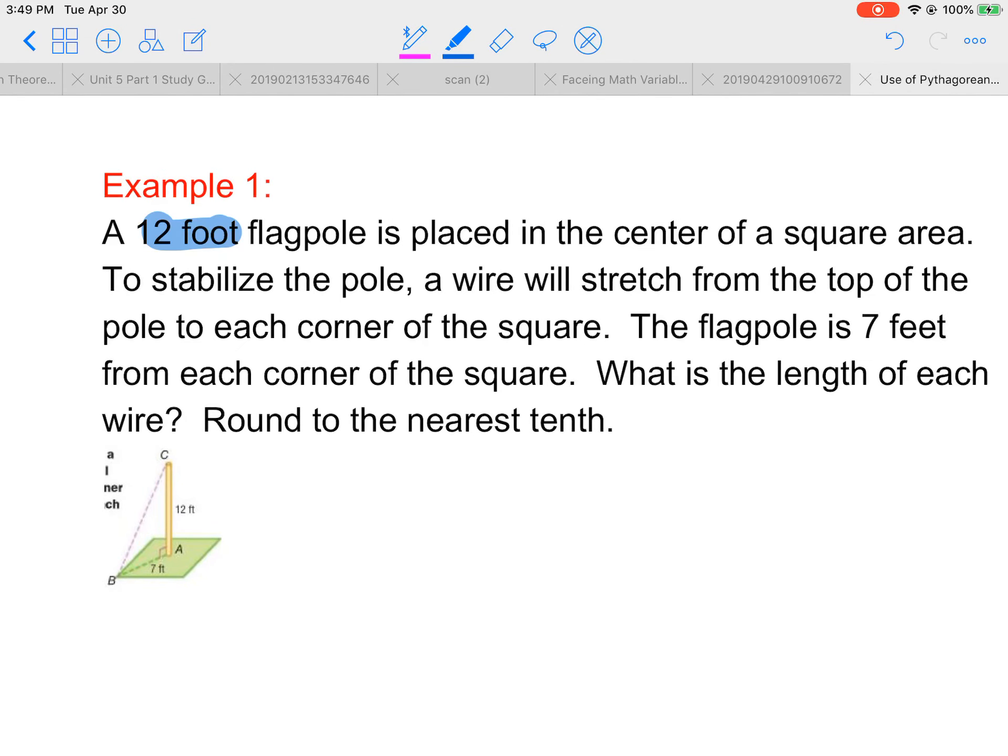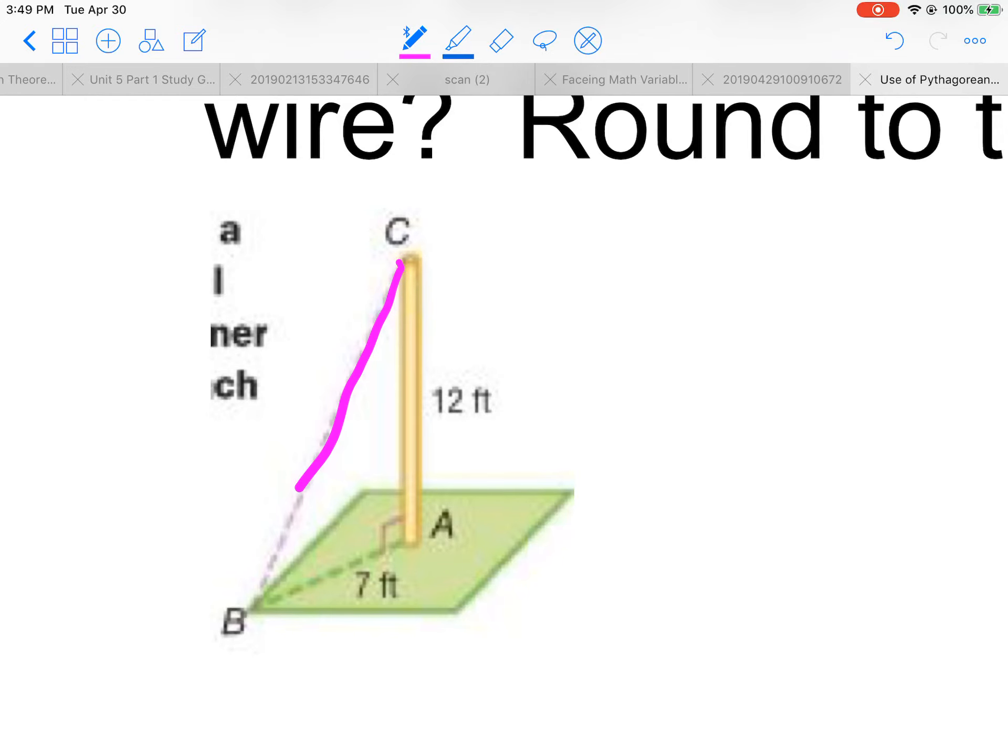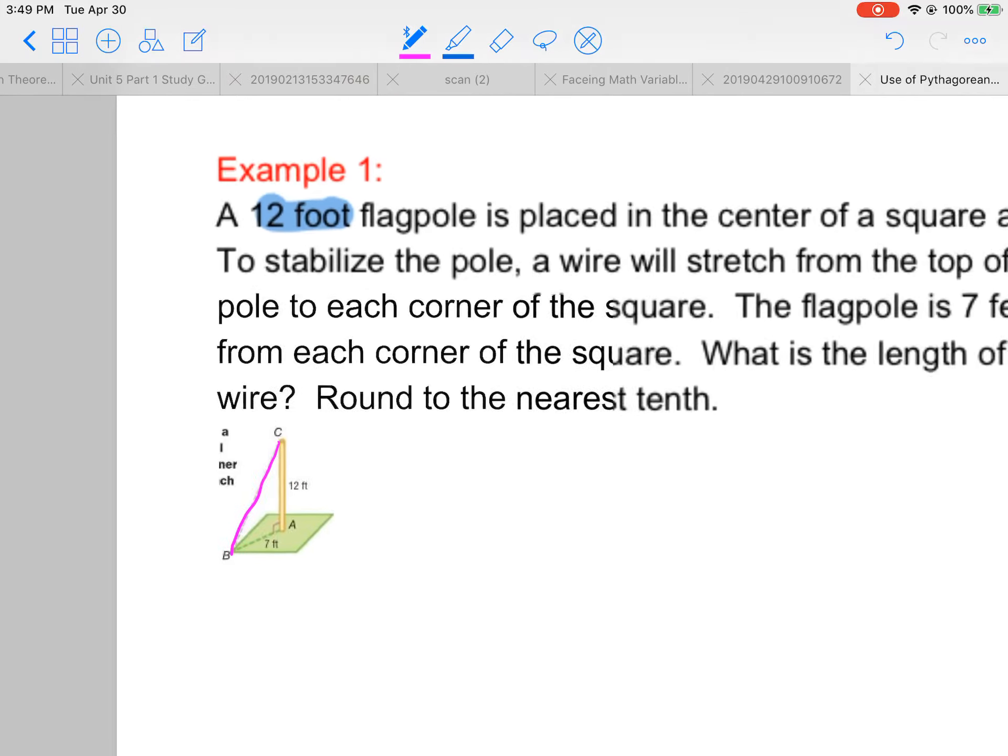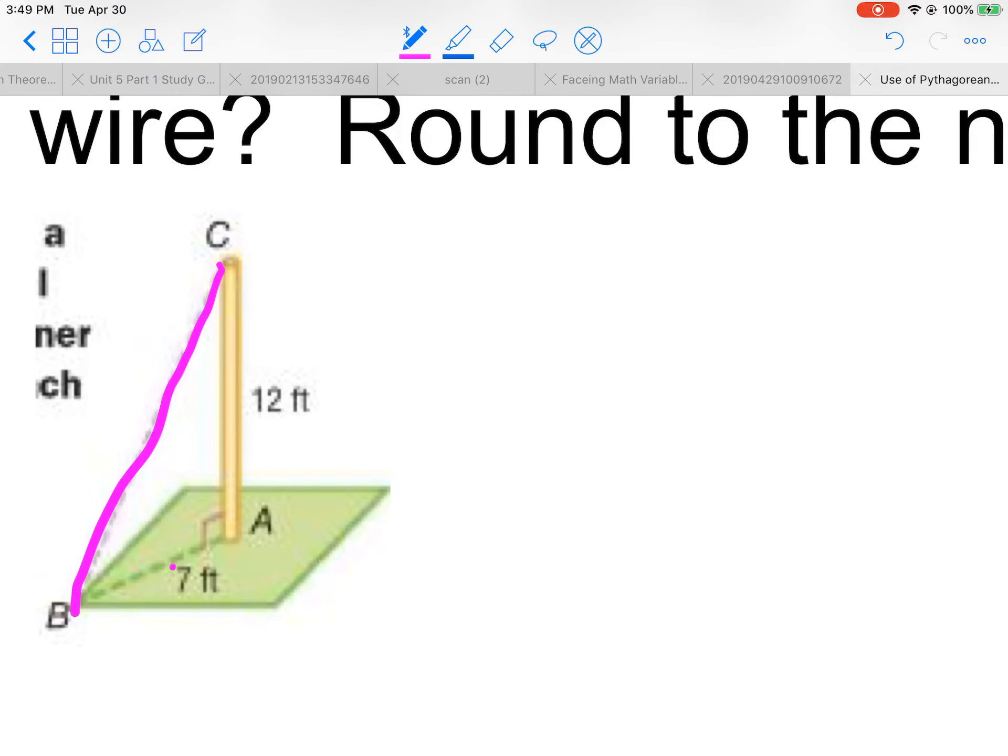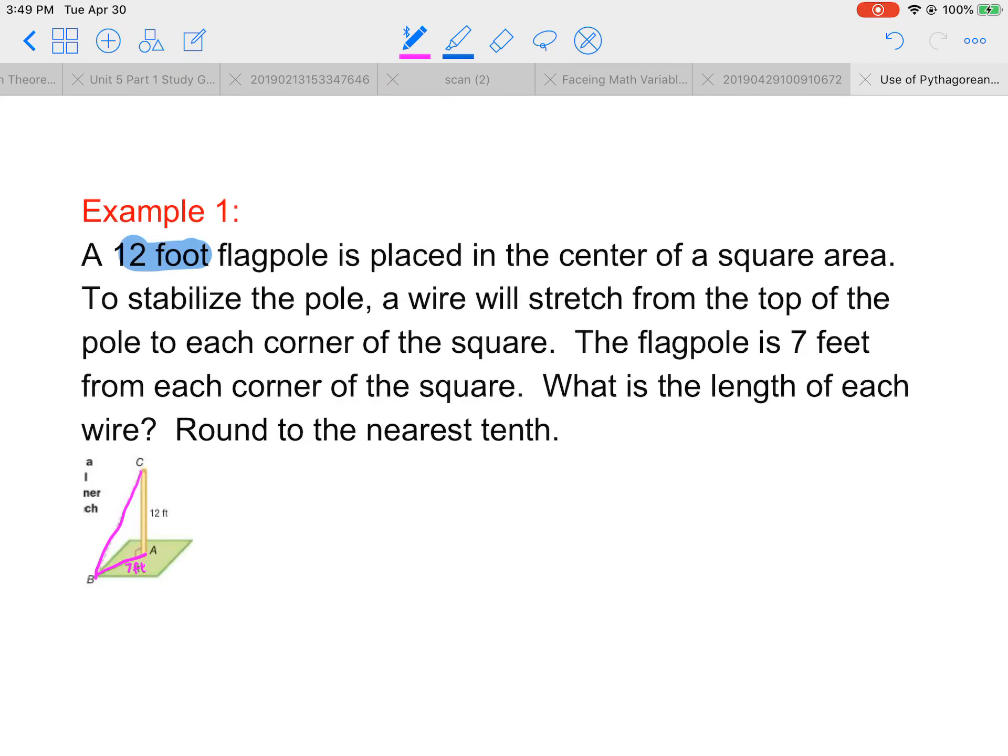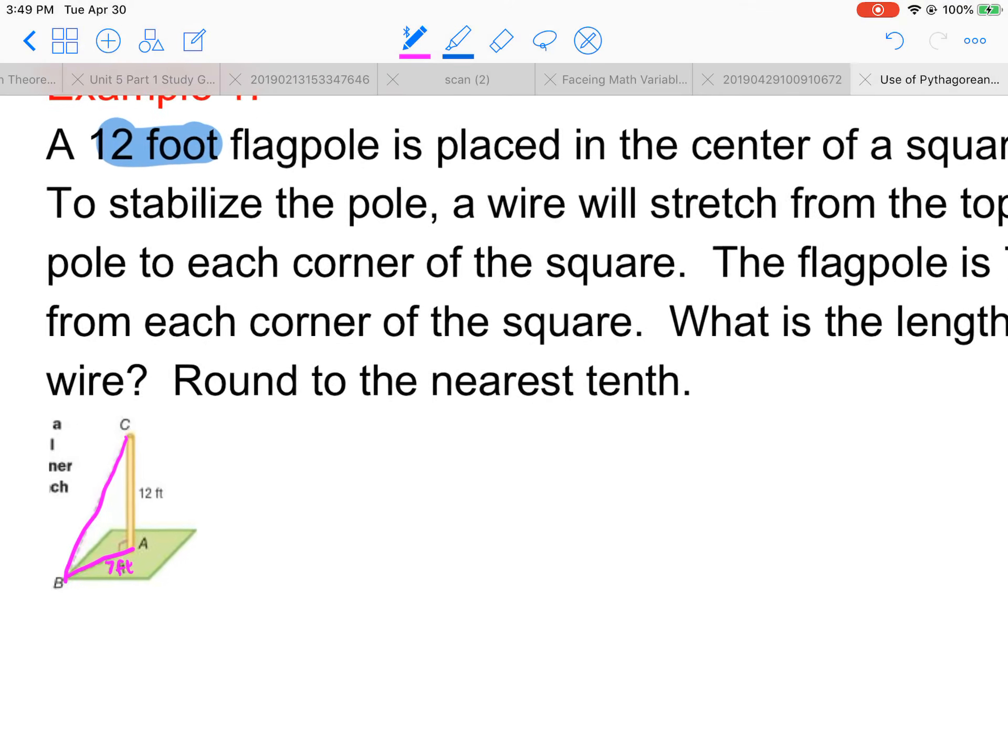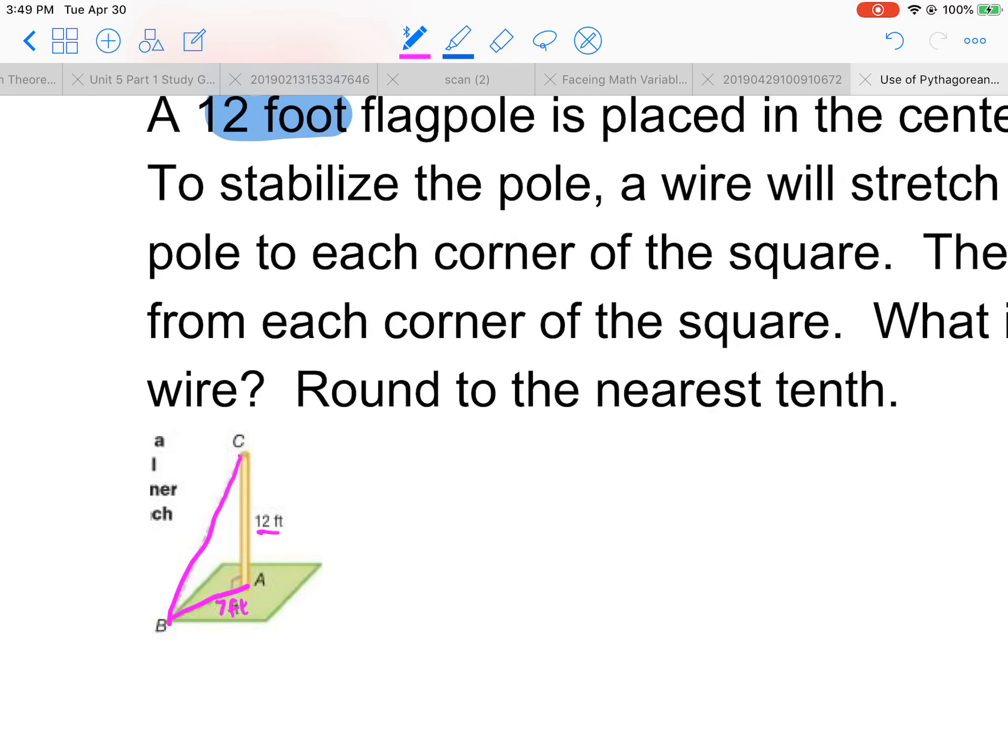A 12-foot flagpole is placed in the center of a square area. To stabilize the pole, a wire will stretch from the top of the pole to each corner of the square. That's right here. The flagpole is 7 feet from each corner of the square. So that's right here, 7 feet from the corner to the flagpole.